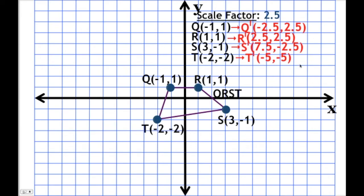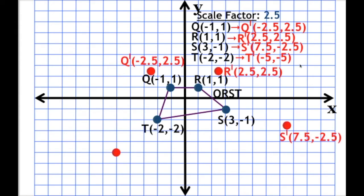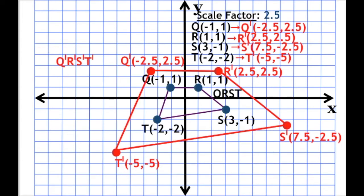The last thing we have to do is plot our points. We've got Q prime, R prime, S prime, and T prime. We then connect them and there is our new figure — quadrilateral Q prime, R prime, S prime, T prime.